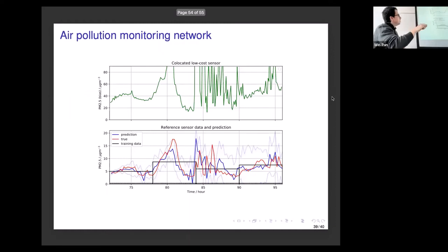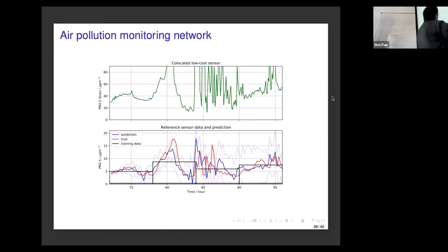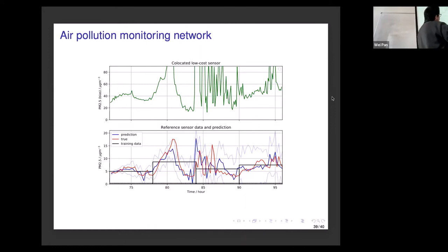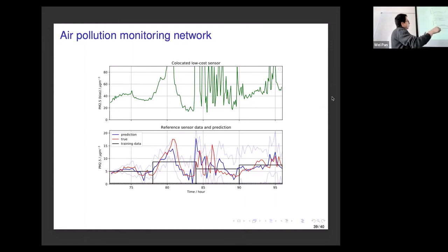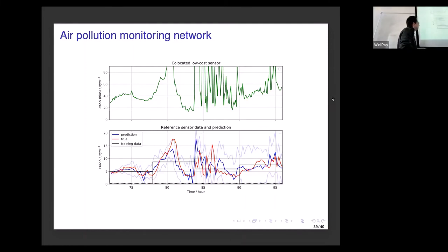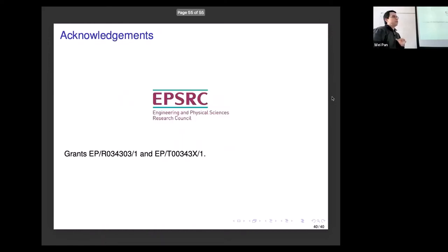Going back to the initial example: in the top panel we're measuring the variable every minute with a low-cost sensor, and in the bottom panel we're measuring every 7 to 10 minutes — that's the black line. We use both data sets to infer what the actual high-quality data would be. The true high-quality data is shown in red, and the prediction from our model is the blue line with credible interval bands. I'll stop here. Thanks.